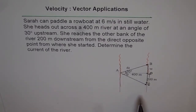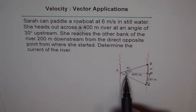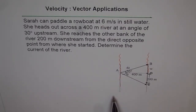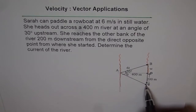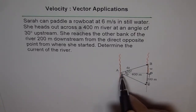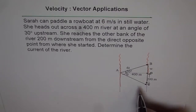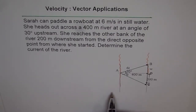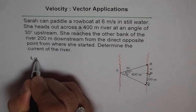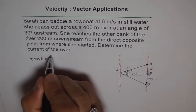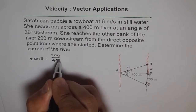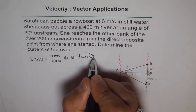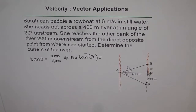As you can see, we have two triangles here. We have a distance triangle: the width of the river is 400 meters and she lands 200 meters down. We can find the angle theta from our distance vector diagram. Considering triangle AOC, we can say tan of theta equals the opposite side 200 over 400. So tan theta equals 200 over 400.